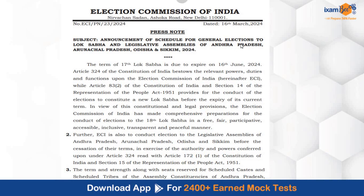As you can see, this is a screenshot of that press note: 'Announcement of Schedule for General Elections to Lok Sabha and Legislative Assemblies of Andhra Pradesh, Arunachal Pradesh, Orissa, and Sikkim, 2024.' Details about assembly constituencies for these four states have been released. In addition, seven phases have been announced — the entire elections will take place in a process of seven phases altogether.